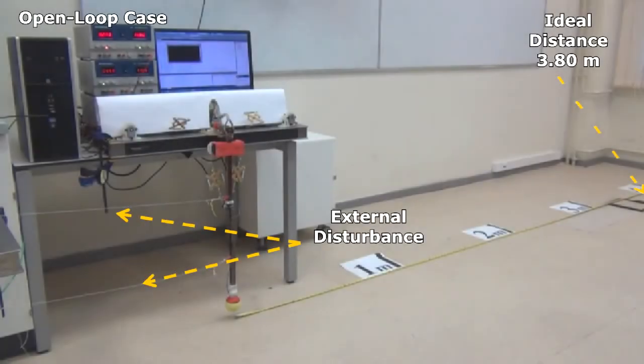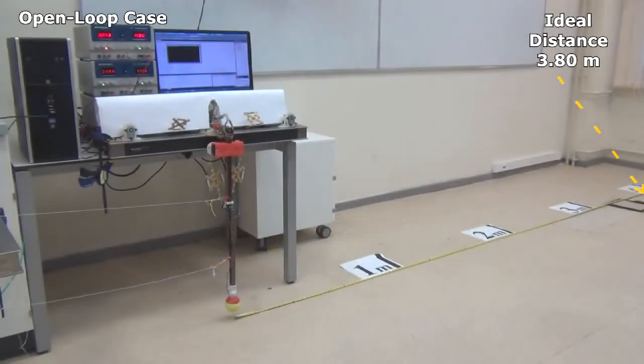To compare the robustness of the closed-loop control to the open-loop approach, experiments were conducted with external disturbance applied to the robot.